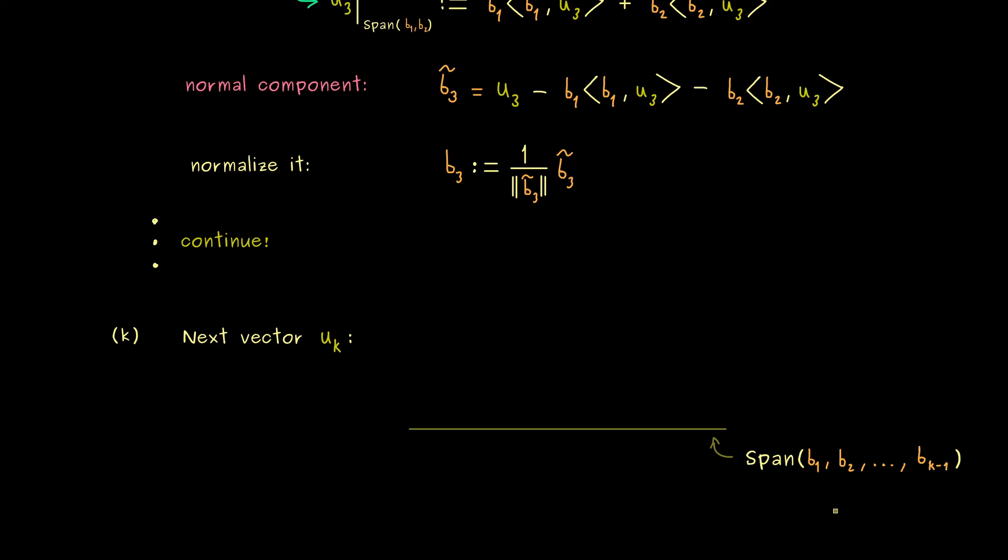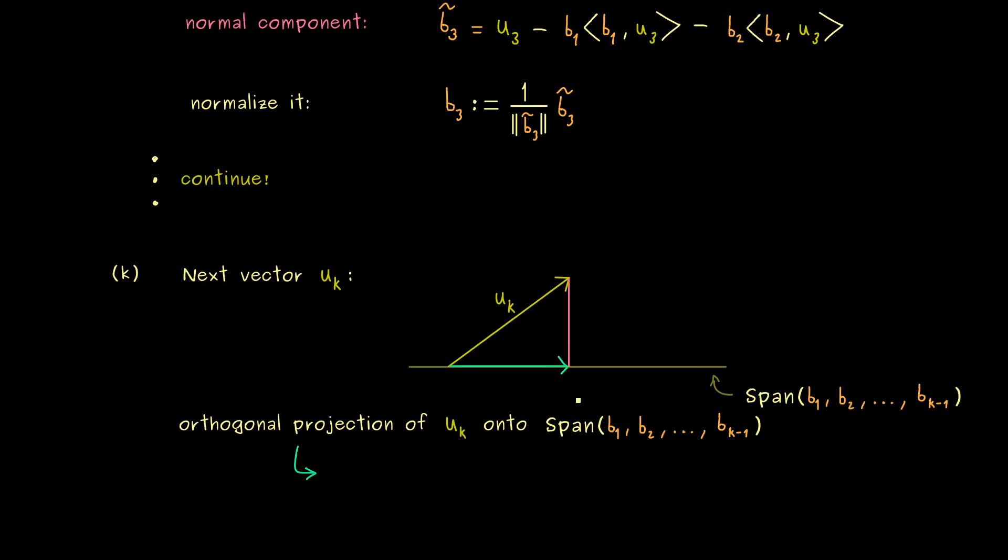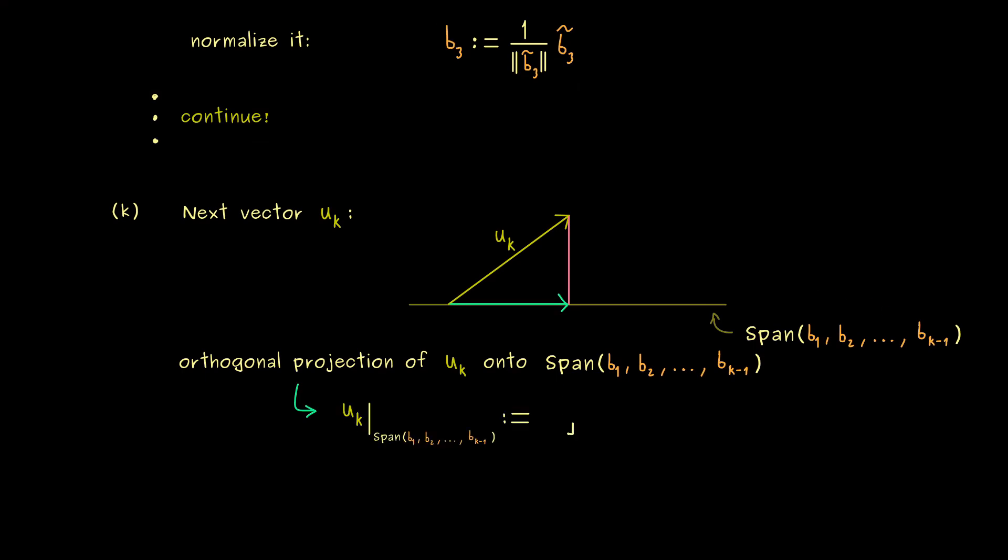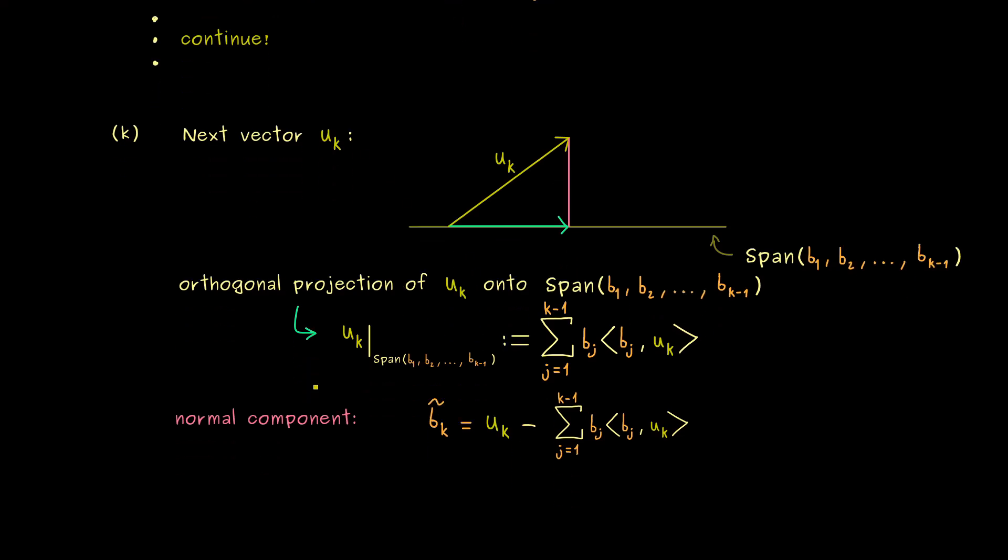In fact, this is an ONB, as the steps before tell us. And now since uk does not lie in this span, we can do the orthogonal projection again. And then I don't have to tell you, we will take the normal component again. So the only thing you have to know here is the general formula of the orthogonal projection. And as before this is really easy because we have an ONB. It's simply given by the sum of the one-dimensional projections. Hence we have j that goes from 1 to k minus 1, and then we project uk to each bj. And then we do the same thing as before. Subtracting gives us the normal component, and also don't forget, the last step is normalization. And then this finally defines our bk.